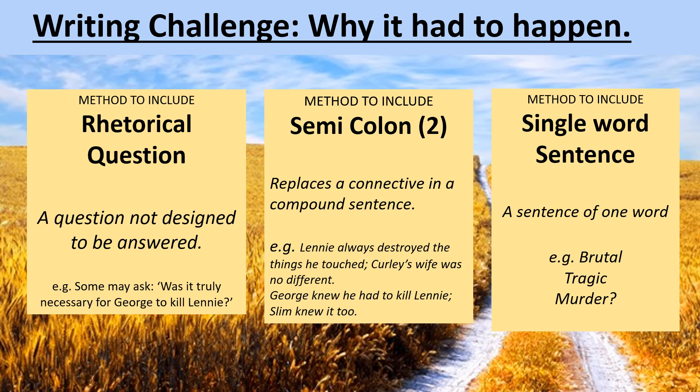Finally, a single-word sentence — this can be quite tricky because single-word sentences tend to work better in polemic writing. But we'd like you to try to get a sentence of only one word. You could combine this with a rhetorical question: something like 'Brutal?', 'Tragic?', or 'Murder?' — which could be quite a thought-provoking way to start one of your ideas. A rhetorical question like 'Why on earth did he have to kill Lenny?' or 'Was George always going to have to kill Lenny?' is a question not designed to be answered, but designed to be thought-provoking.